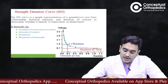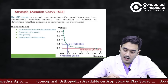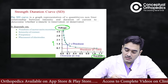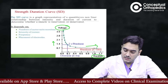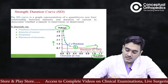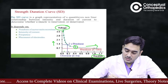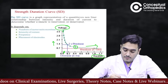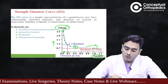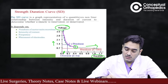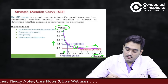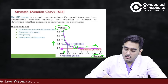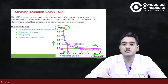The graph plots voltage against time. When a higher voltage stimulus is given, the response is generated very quickly. When a lower intensity voltage is given, the response is obtained at a higher duration on the time axis. This relationship represents the strength duration curve.